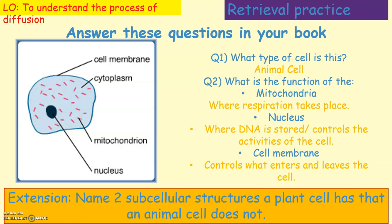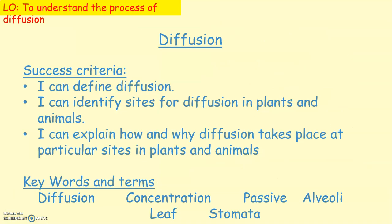At the end of this lesson you should be able to define diffusion, identify sites for diffusion in plants and animals, and explain how and why diffusion takes place at different sites. Key words for this lesson include: diffusion, concentration, passive, alveoli, villi, and stomata.